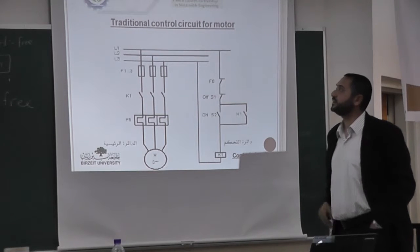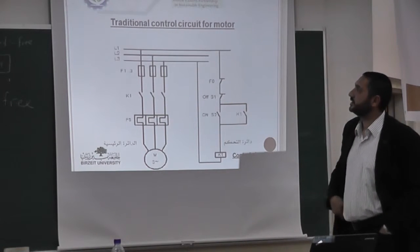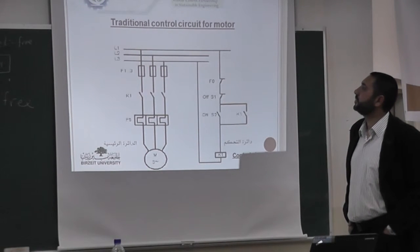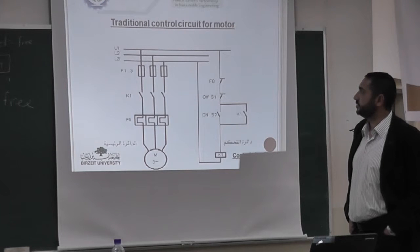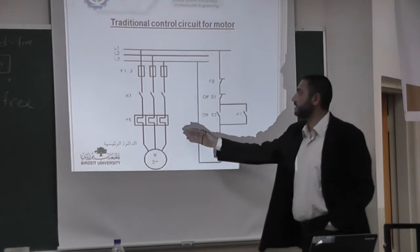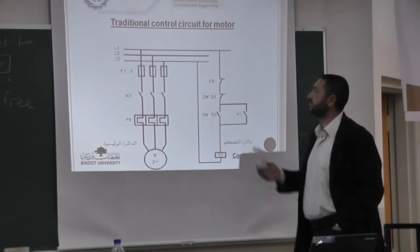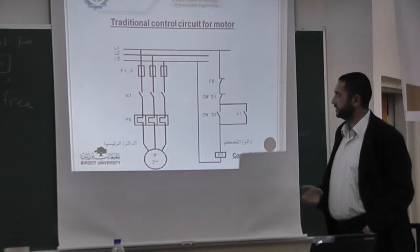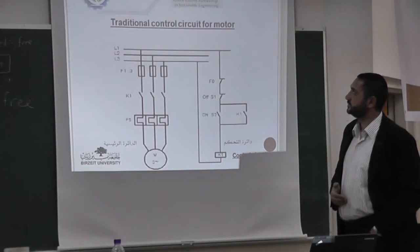Here is an example of a traditional control circuit for a motor using contactors, with start, stop, and auxiliary contactors.